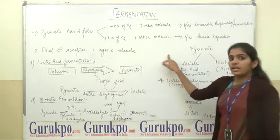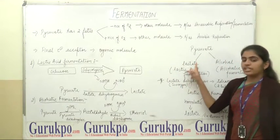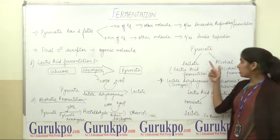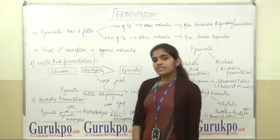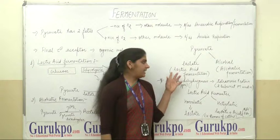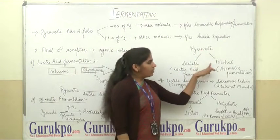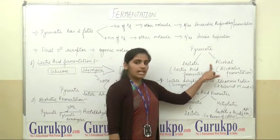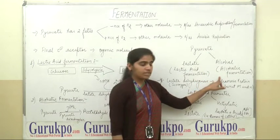The pyruvate is converted into two forms: either into lactate or into alcohol. If it converts into lactate, this process is known as lactic acid fermentation. Whereas, when pyruvate is converted into alcohol, this process is known as alcoholic fermentation.